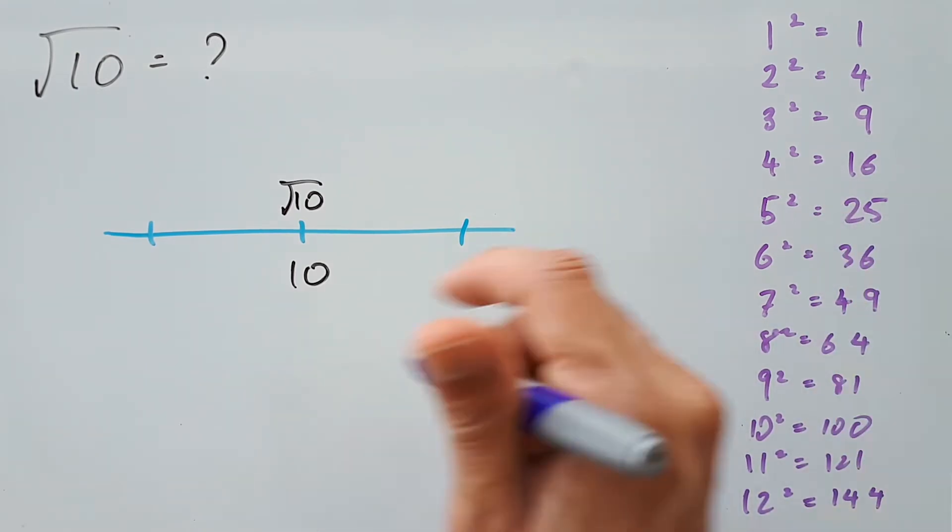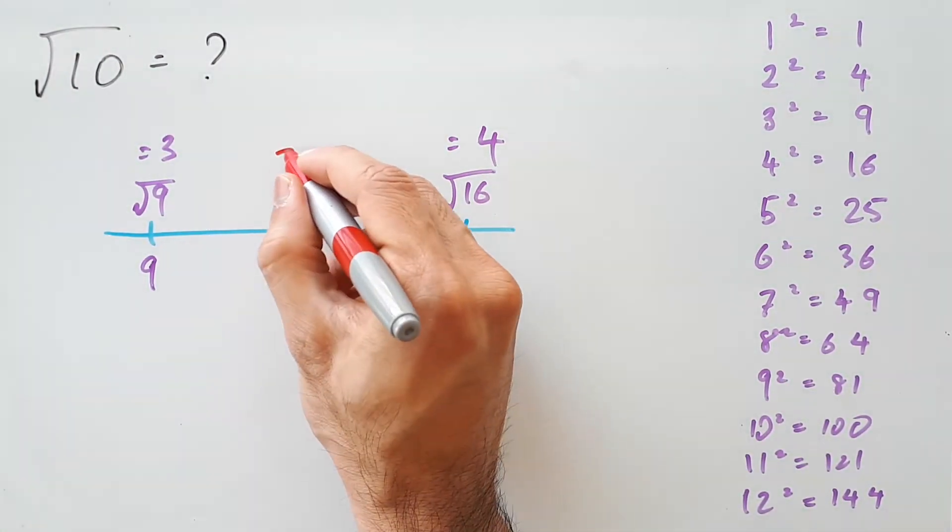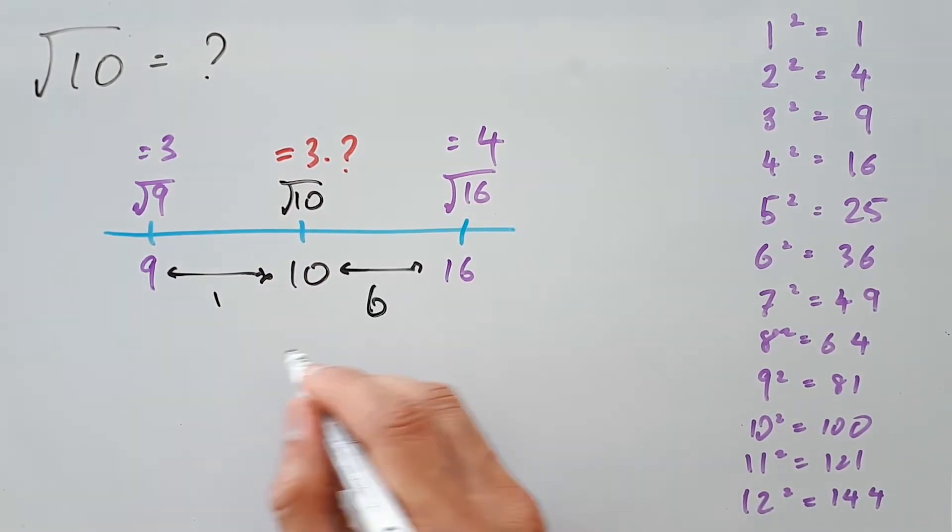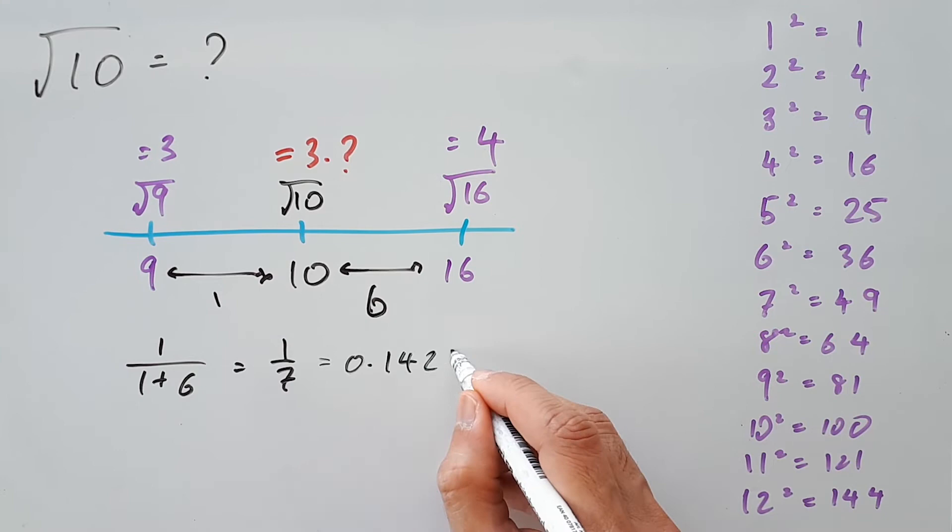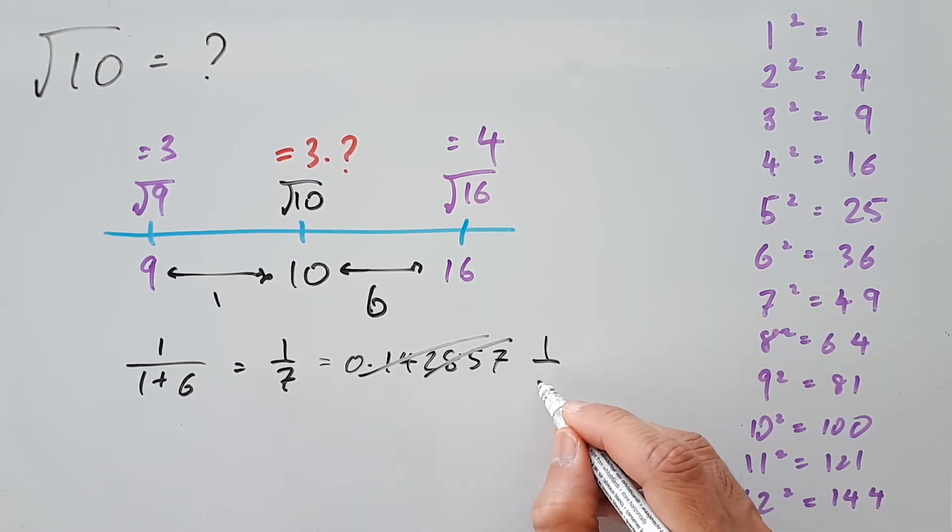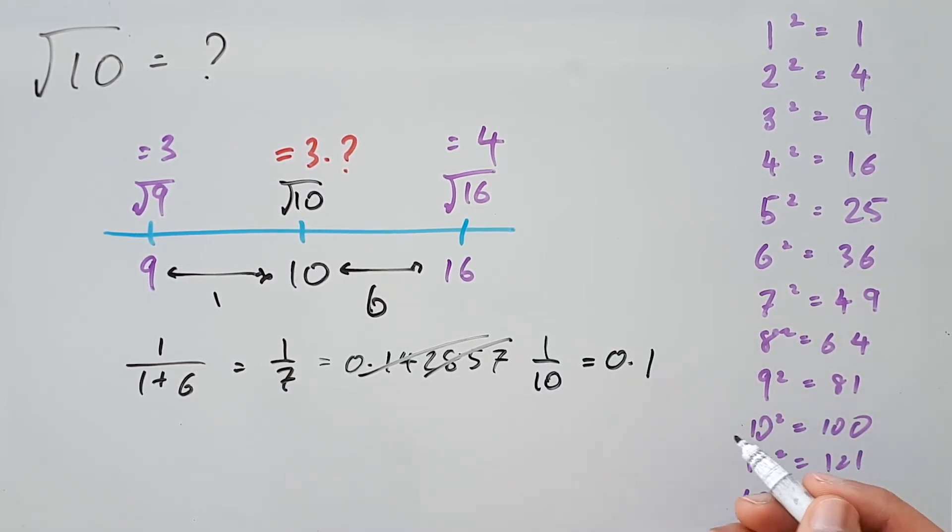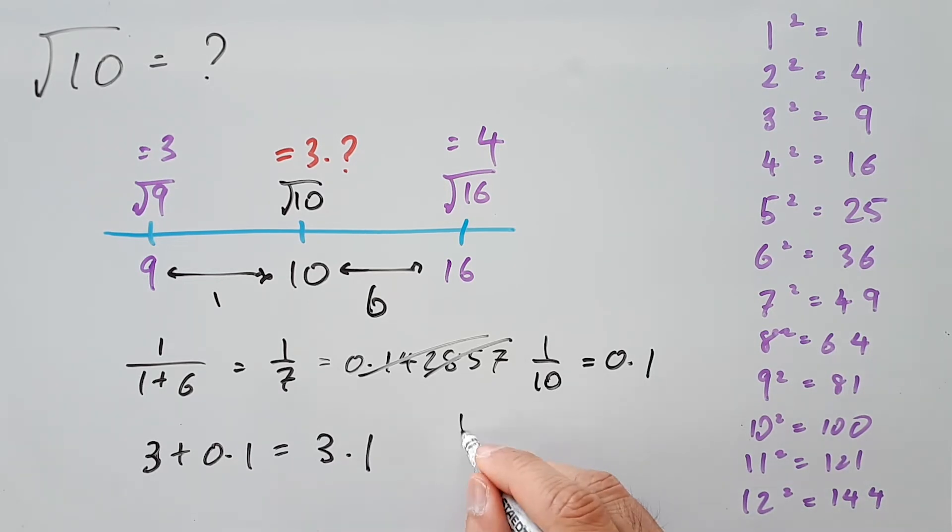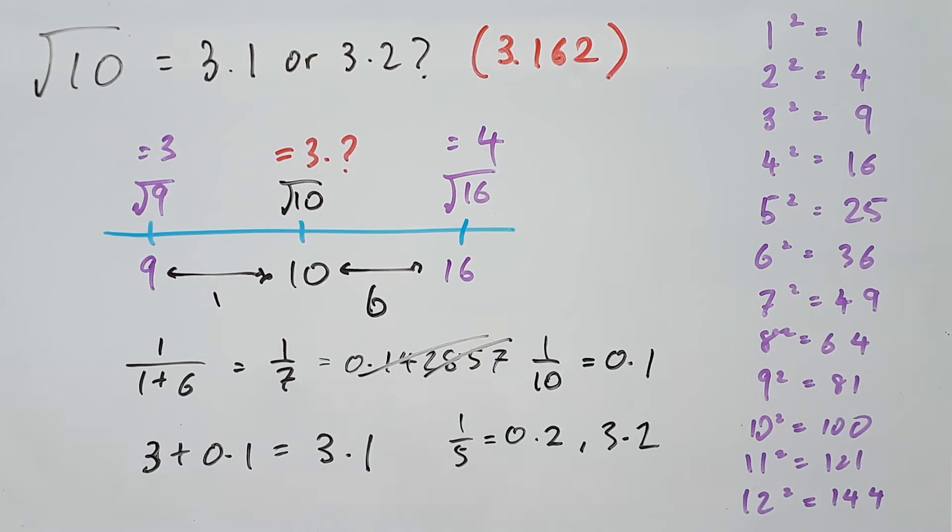So 10 is between 9 and 16, which means square root 10 is between 3 and 4, so it must be 3 point something. Taking the differences and doing the math, we find that our decimal value is 0.142857. But if you don't know this value off the top of your head, that's totally fine. You can either divide 1 by 7 to get the first decimal, or simplify the fraction to something easier like 1 on 10, which gives you the value 0.1. Either way, when you add it to 3, we get the answer 3.1. Technically, we could have rounded 1 on 7 down to 1 on 5, or 0.2, giving us a final answer of 3.2. And that wouldn't be far off either, because whether you write 3.1 or 3.2, the precise answer is 3.162. But square root 10 is still fairly small, so it's no surprise that our estimate is pretty good still.